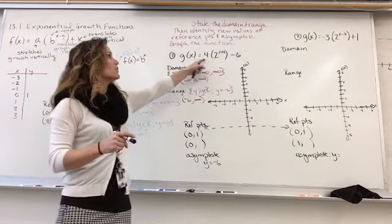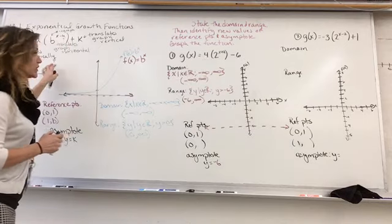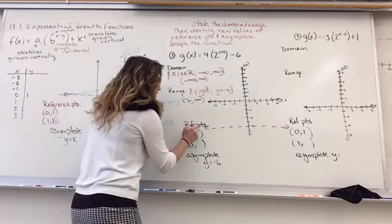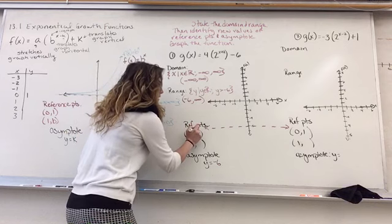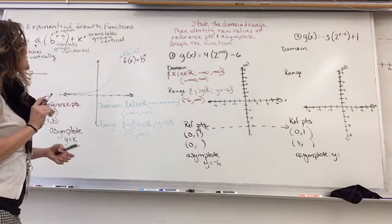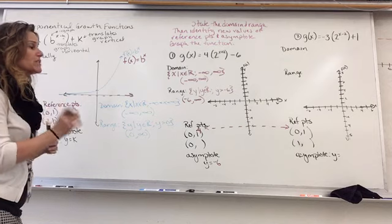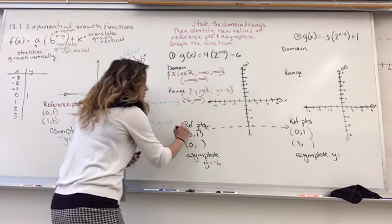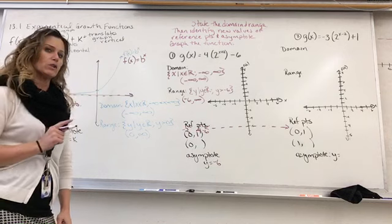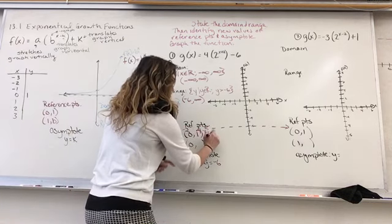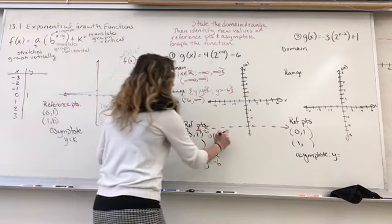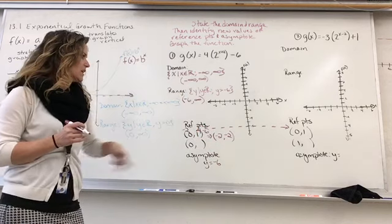For reference points: the A value is a vertical stretch, so it gets multiplied to the Y value — we're going to multiply by 4. This 2 is a horizontal translation; because the equation says minus, we're moving 2 units to the left for X, so we subtract 2 from X. We also subtract 6 from the Y value after multiplying by 4. So: 0 minus 2 is negative 2; 1 times 4 is 4, minus 6 is negative 2.